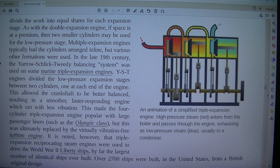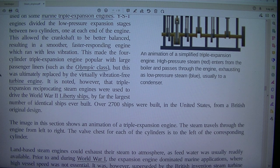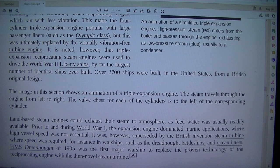In the late 19th century the Yarrow-Tweedy balancing system was used on some marine triple expansion engines. Y-type engines divided the low pressure expansion stages between two cylinders, one at each end of the engine. This allowed the crankshaft to be better balanced, resulting in a smoother, faster responding engine which ran with less vibration. This made the four-cylinder triple expansion engine popular with larger passenger liners, such as the Olympic class, but this was ultimately replaced by the virtually vibration-free turbine engine.